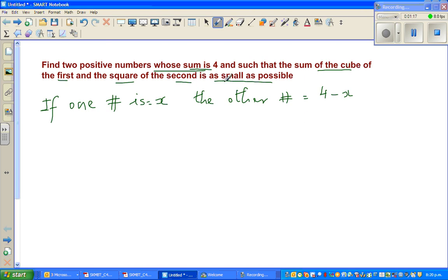And the sum of the cube of the first and the square of the second—we want to make it as small as possible. So we'll express that as x cubed plus (4 minus x) squared. You want to minimize this function.